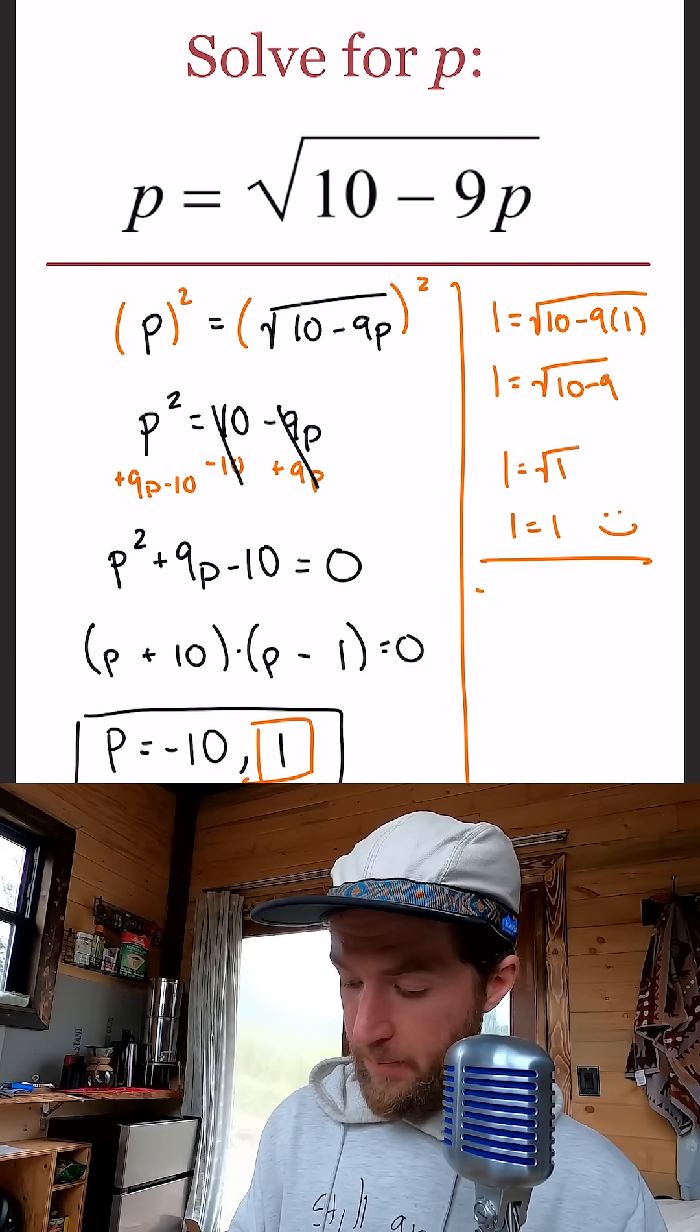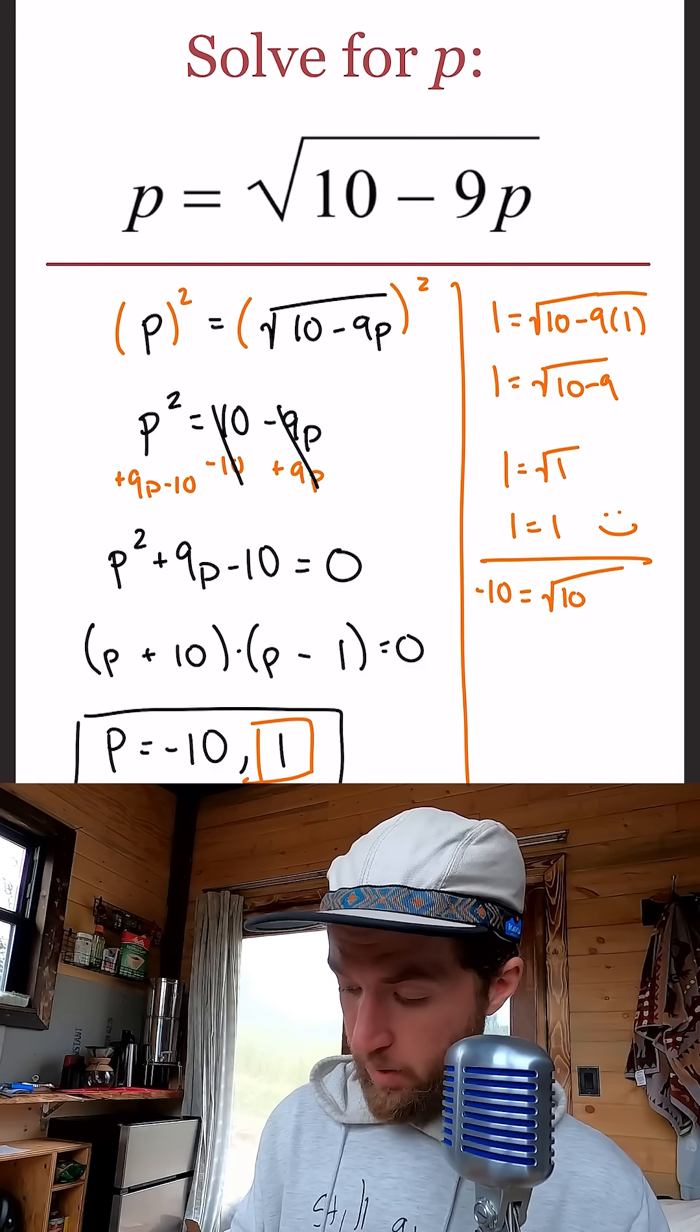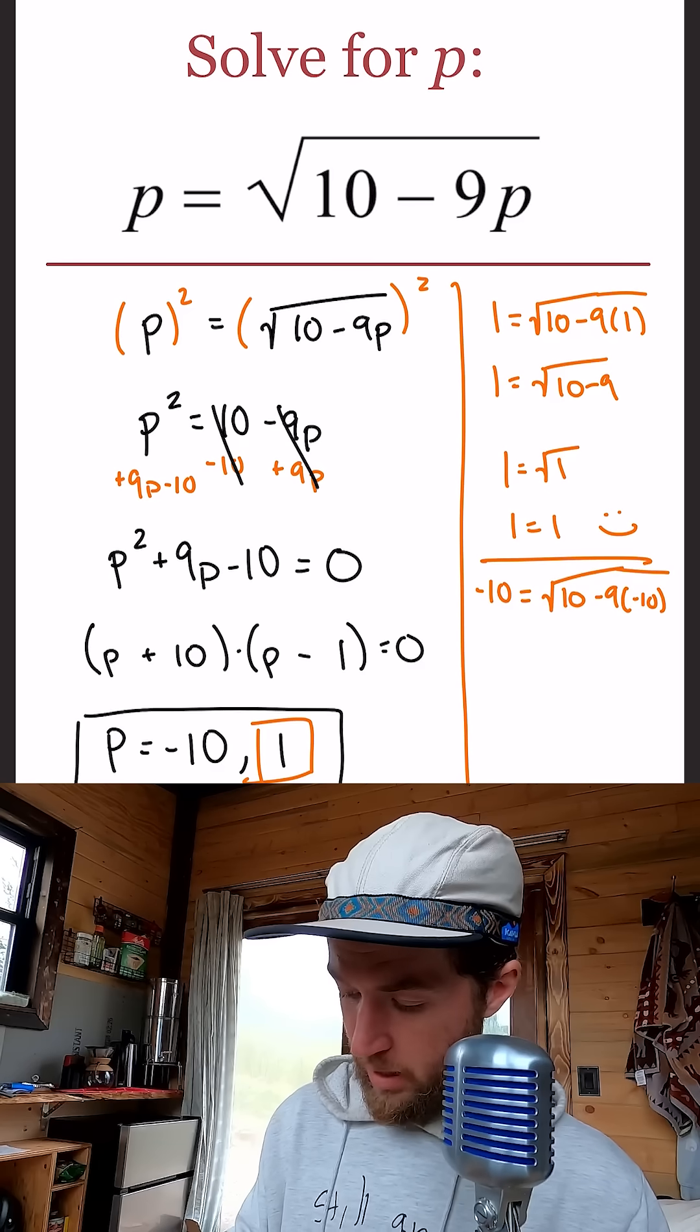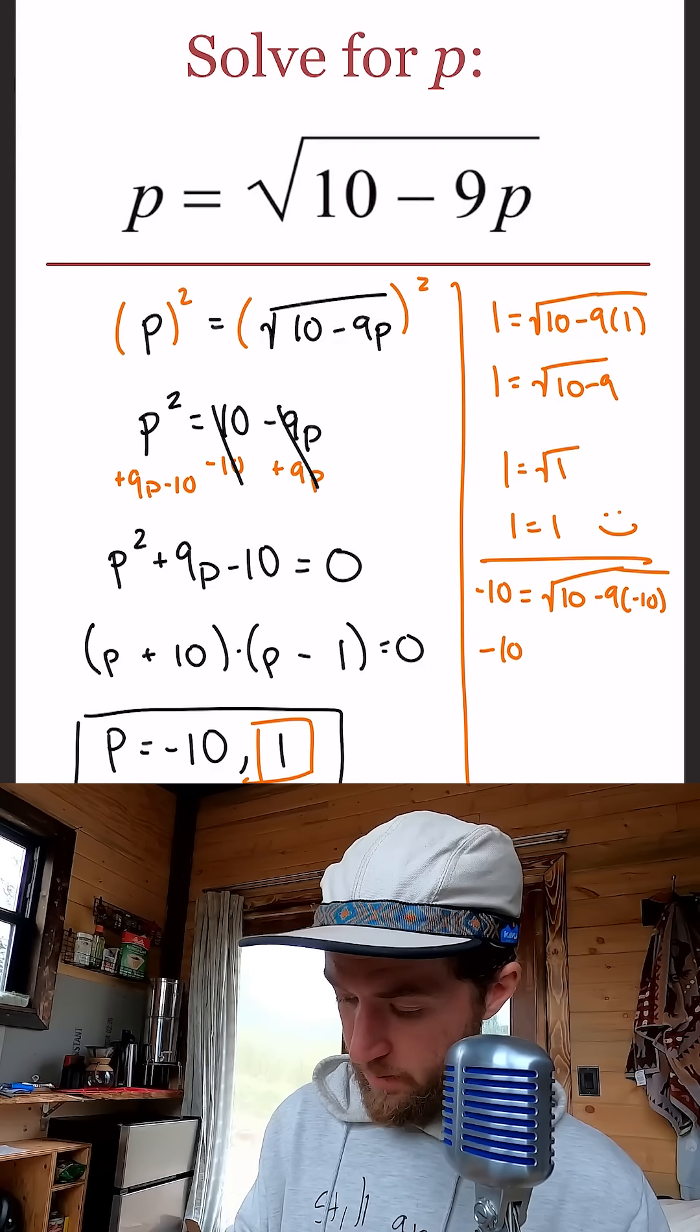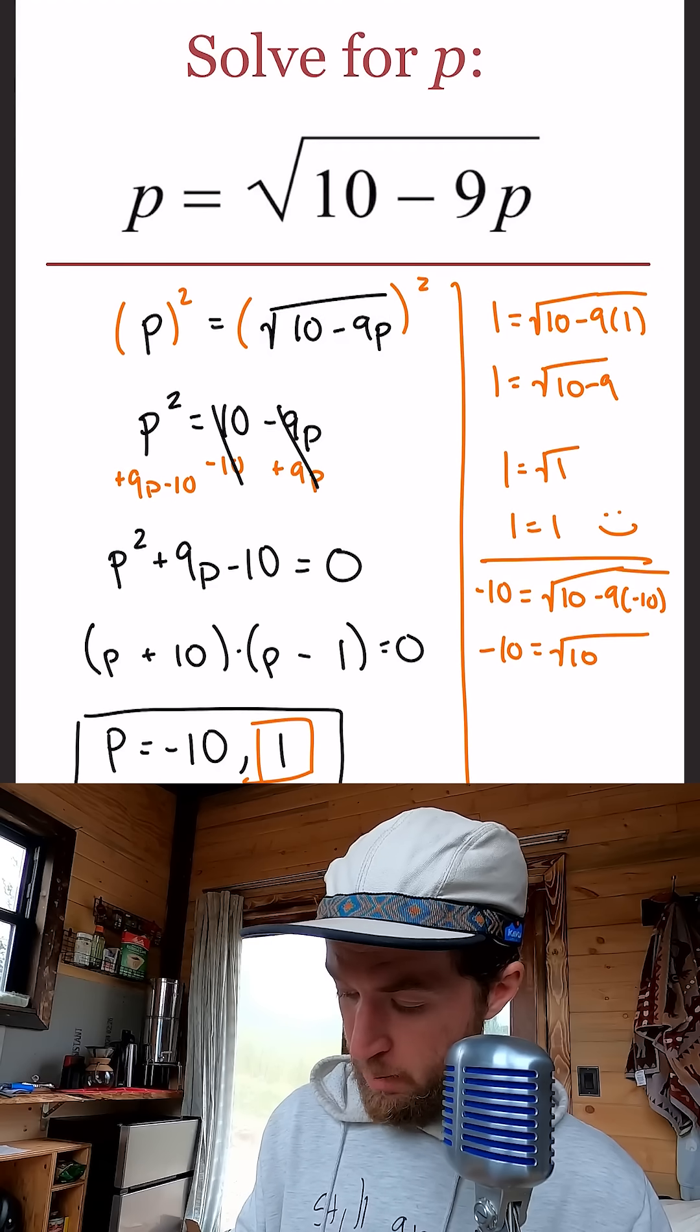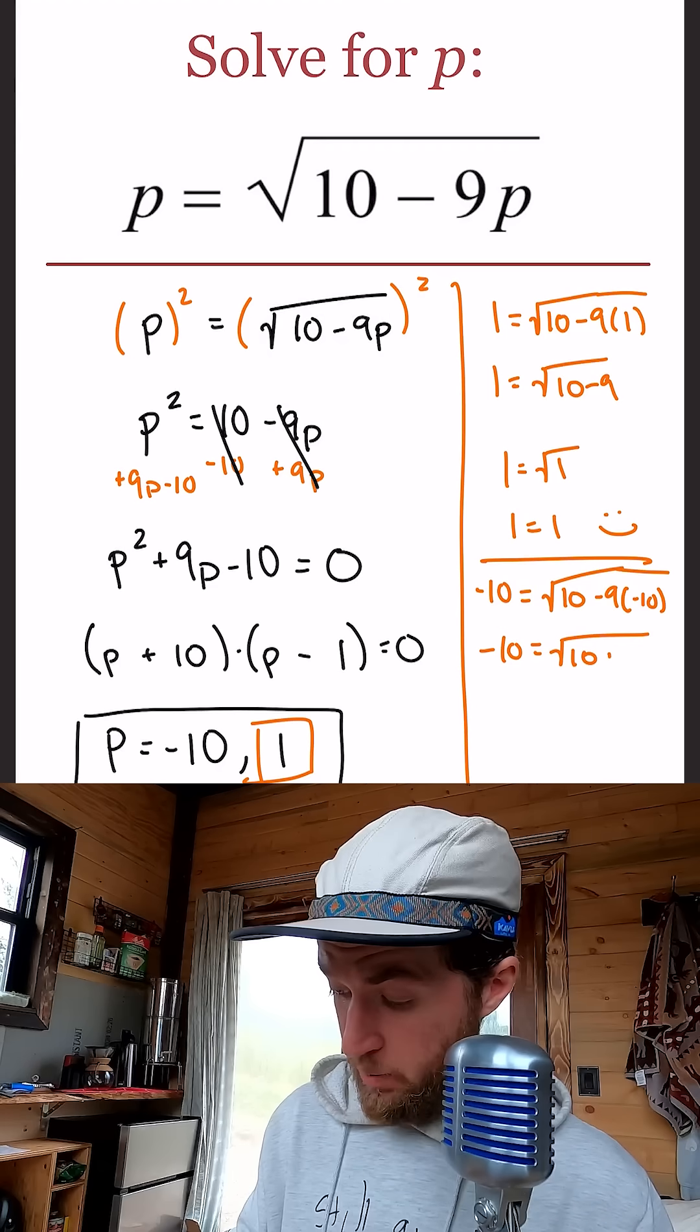Let's try negative 10. Okay, does negative 10 equal the square root of 10 minus 9 times negative 10? So does negative 10 equal the square root of 10 minus 9 times negative 10, which is plus 90?